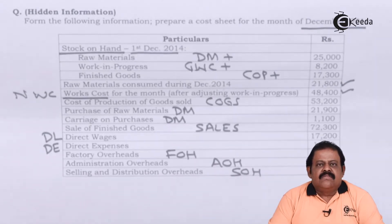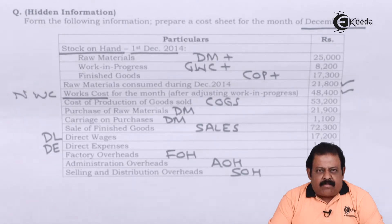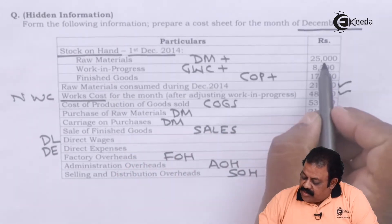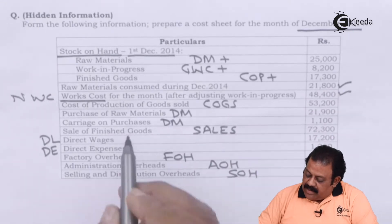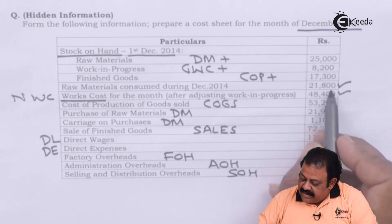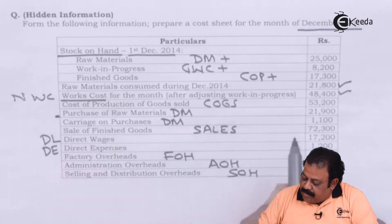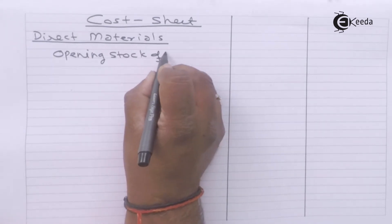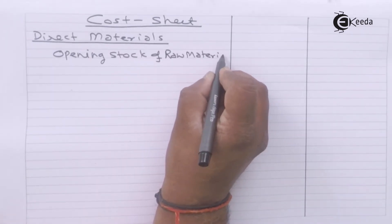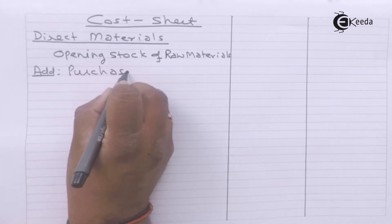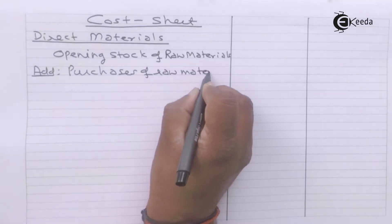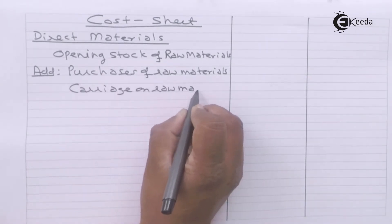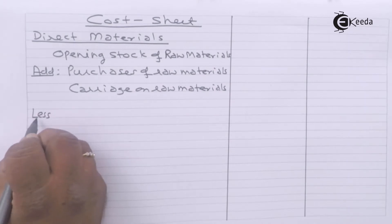Let us start with the cost sheet. We are required to complete the format here to get the missing information. First, we consider direct material. Opening stock of raw material is given as 25,000. Raw material consumed during the period is given as 21,800, and purchase of raw material is 21,900.